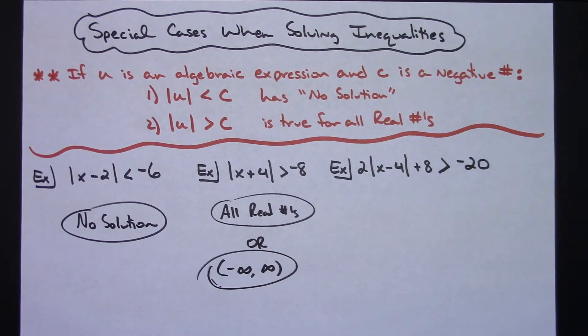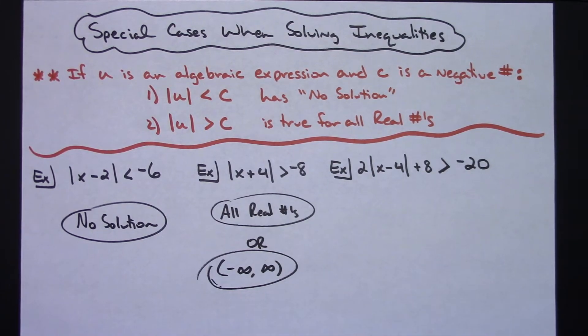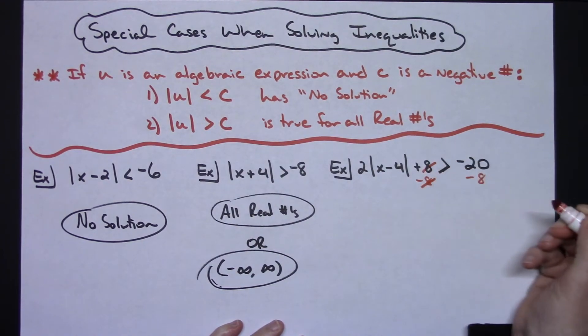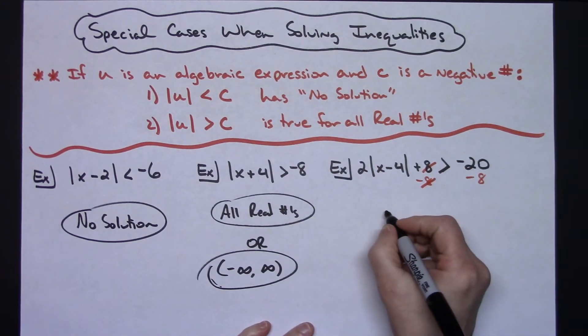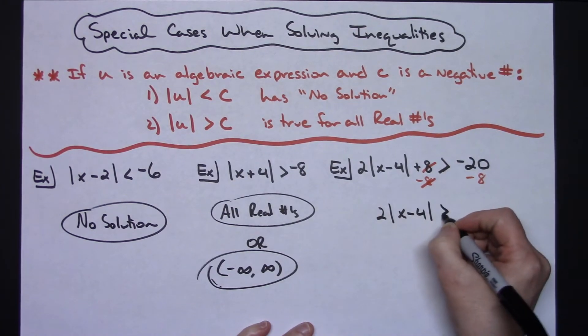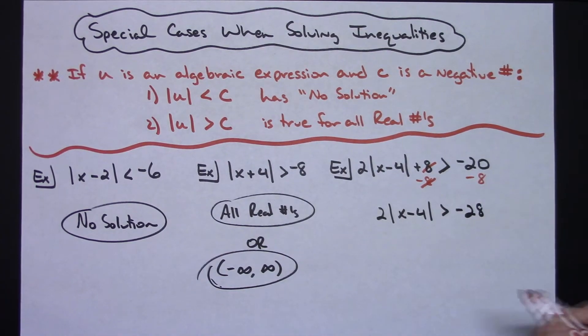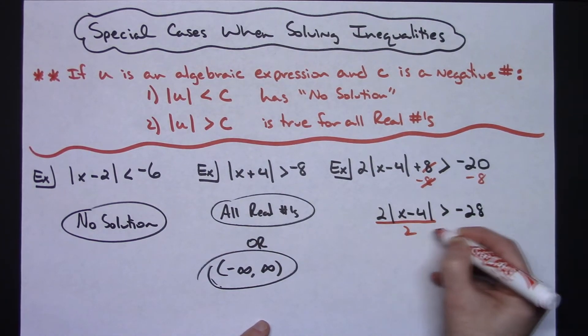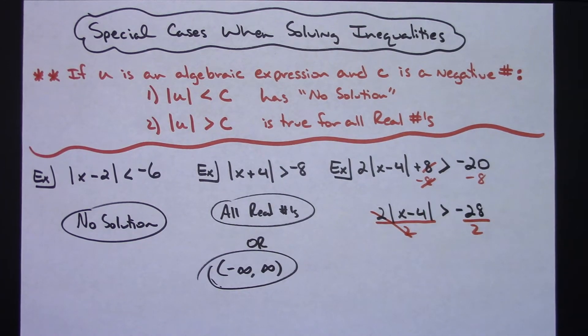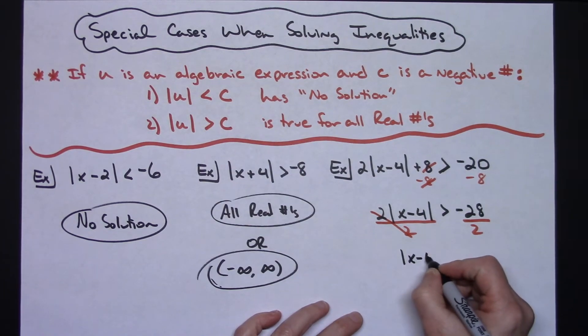Now on this one, I want to subtract 8 from both sides first before I apply my rule. That's going to give me 2 absolute value of x minus 4 is greater than negative 28. Then I'm going to divide both sides by that 2. Since the 2 is positive, there's no flipping of the signs or anything with my inequality rules. So I've just got absolute value of x minus 4 is greater than negative 14.